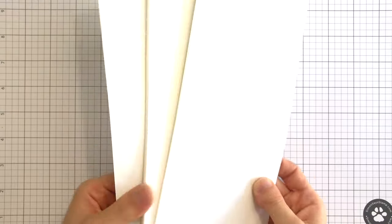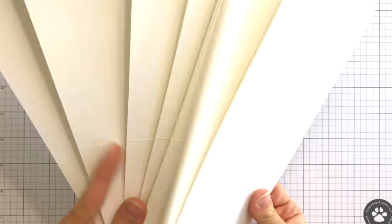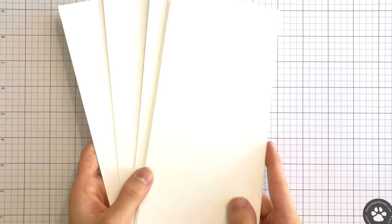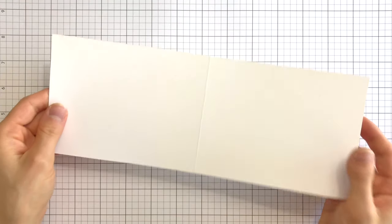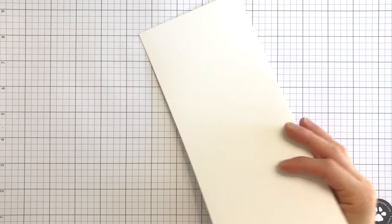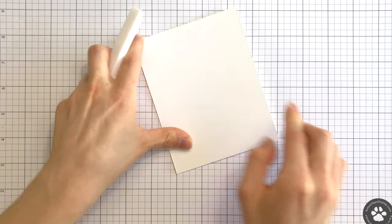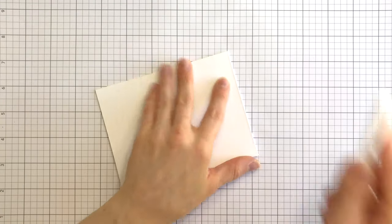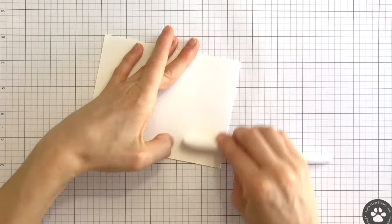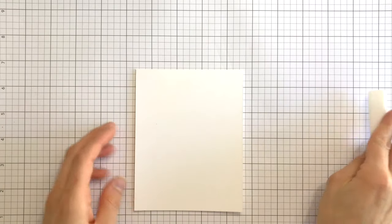Every card needs a good base to start from, and what better base to build your card on than our exclusive A2 top-folding cards. These bright white 4 1⁄4 by 5 1⁄2 inch note cards come in packs of 10, and are made from our high-quality 120-pound white cardstock. Already pre-scored for you, all you need to do is take your Teflon Bone Folder and give them a good crease. Then you can stamp, adhere die cuts, ink blend, and more on these handy bases.